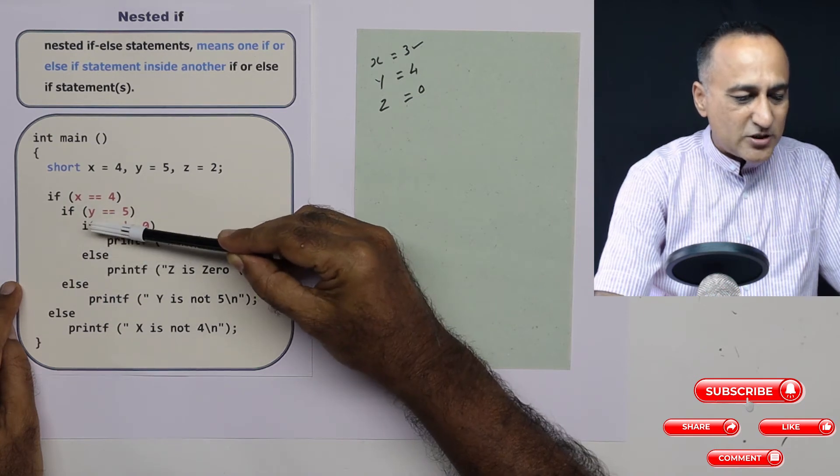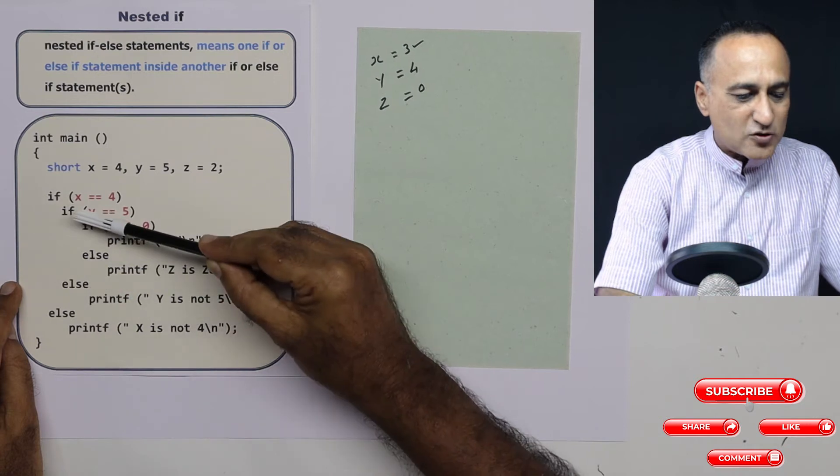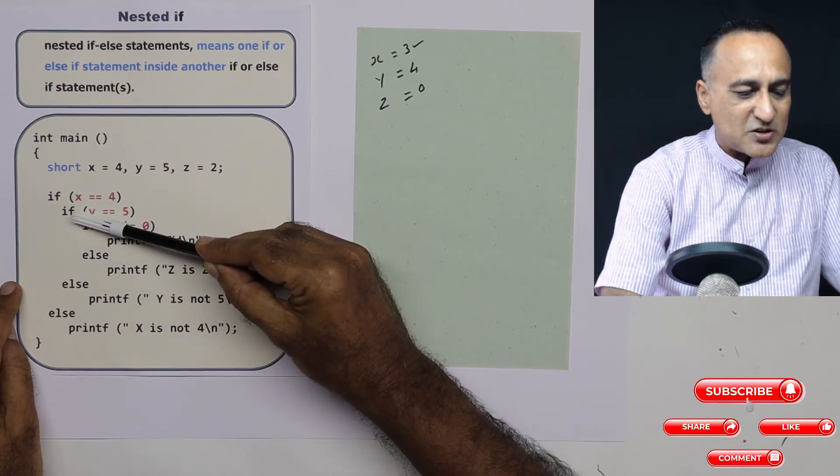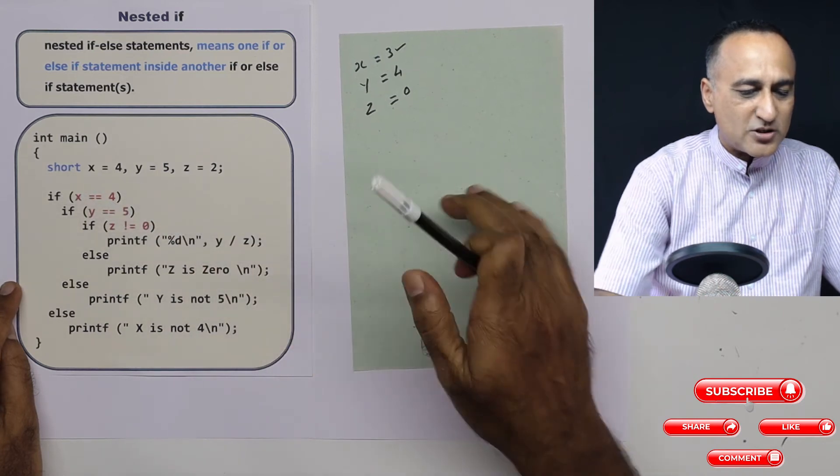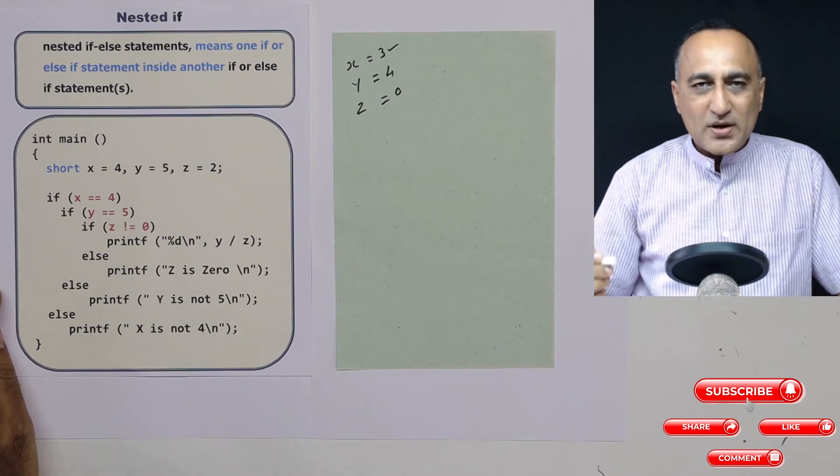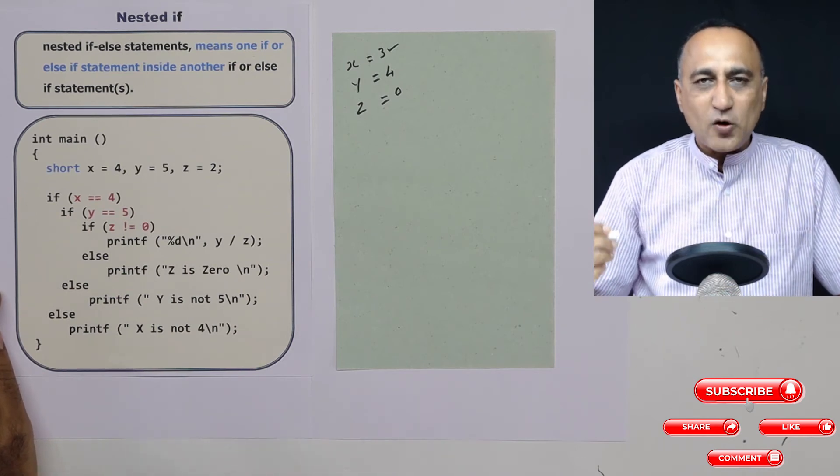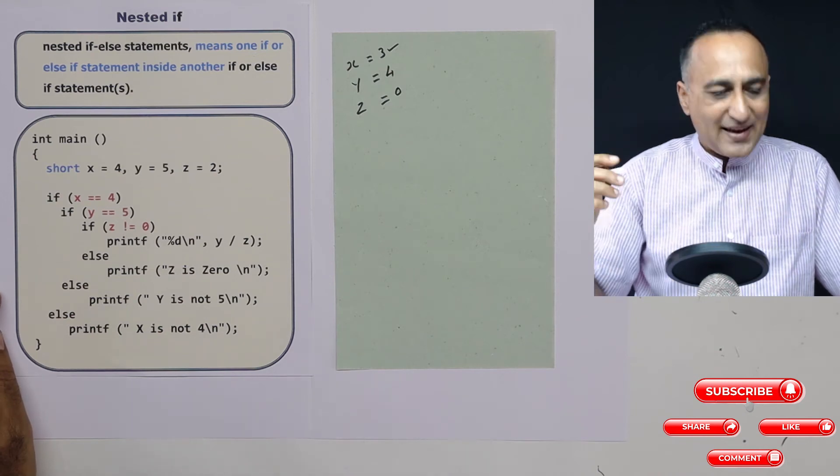The else is always associated with the closest if. So this else is associated with this if. Now this else has to be associated with the next closest if which is this one. And finally, this last else is associated with the if associated with x. So the rule of thumb is the else is always associated with the closest if which is not already associated with some other else.